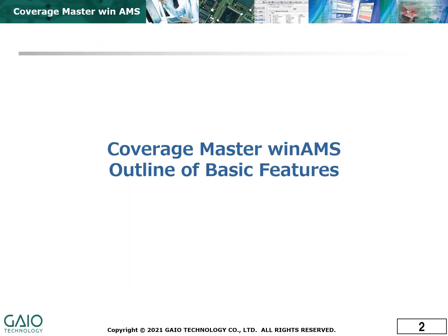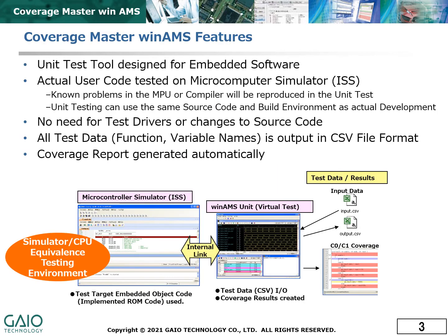First, let's look at the basic functions included in the standard product. CoverageMaster WinAMS can automate unit testing using the actual object code on a simulator of the microprocessor to be used. All test results and coverage reports are output in CSV format for easy handling.